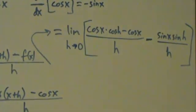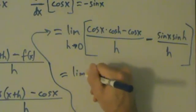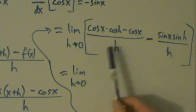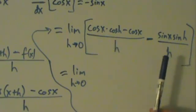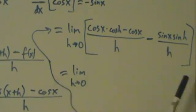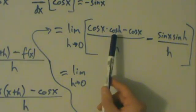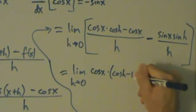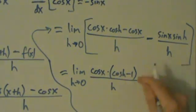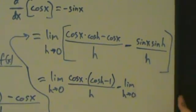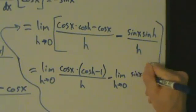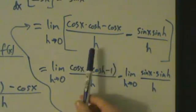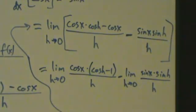The limit of a difference is the difference of the limits. Factoring cosine x from the numerator of the first fraction, we get the limit as h goes to 0 of cosine x times the quantity cosine h minus 1, all over h, minus the limit as h goes to 0 of sine x times sine h over h.